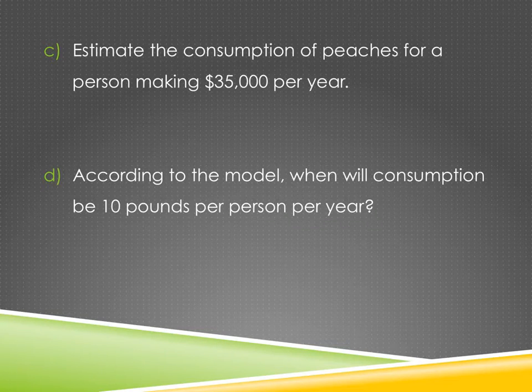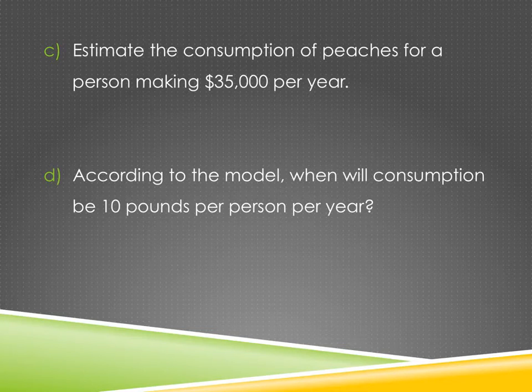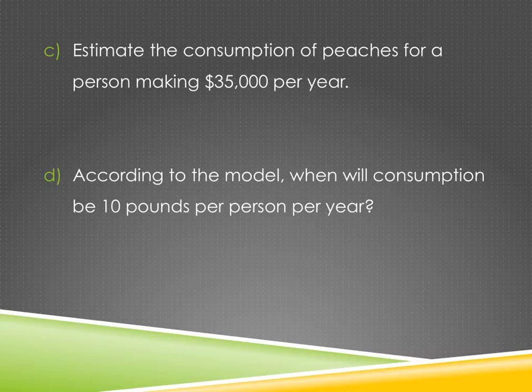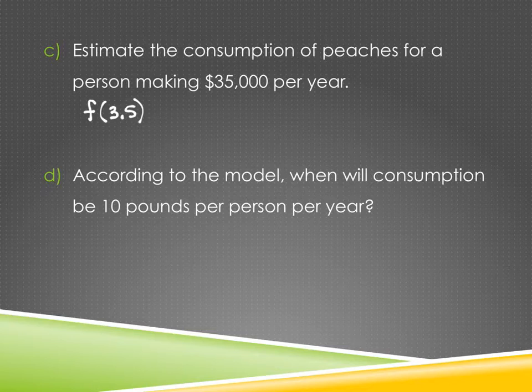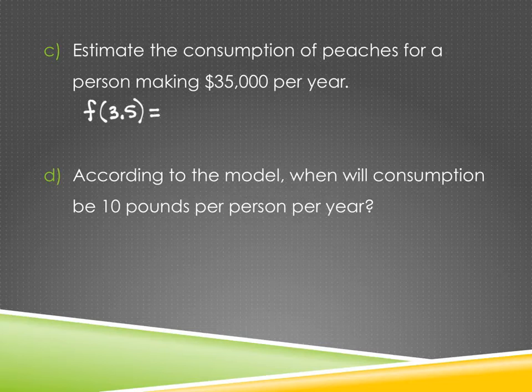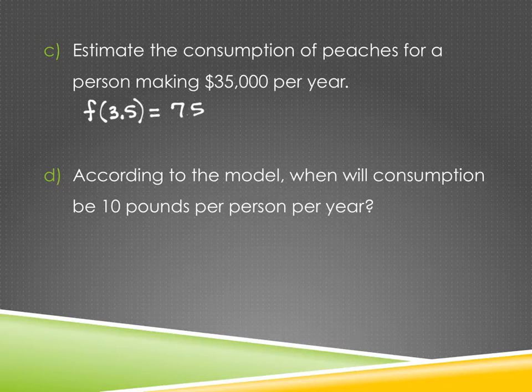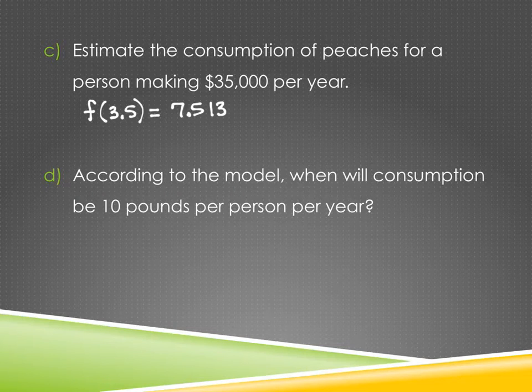Does it have me do anything else with this one? It certainly does. It says, estimate the consumption of peaches for a person making $35,000 per year. So how do I do that? I need to plug it in. What am I going to actually plug in? 3.5, because it represents the 35,000. Right, so I called my function F. So I'm going to write F of 3.5. And at this point, you don't have to actually show the plugging in part. F of 3.5 tells me that that's what you're doing. So if you take your calculator and you go into your table and put in 3.5, mine says 7.513. Is that what yours says? Excellent.